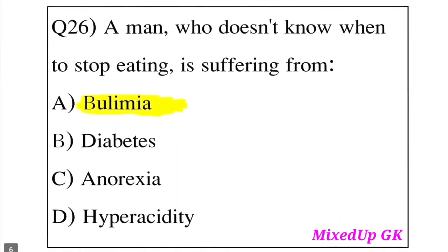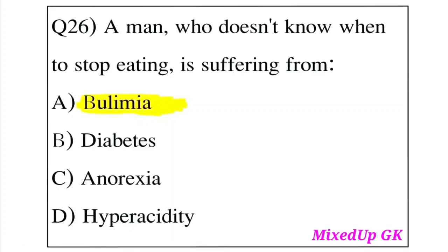Question 26: A man who does not know when to stop eating is suffering from which condition? Option A: Bulimia. Option B: Diabetes. Option C: Anorexia. Option D: Hyperacidity. The answer is Option A, Bulimia. Bulimia is the condition where a person cannot stop eating.